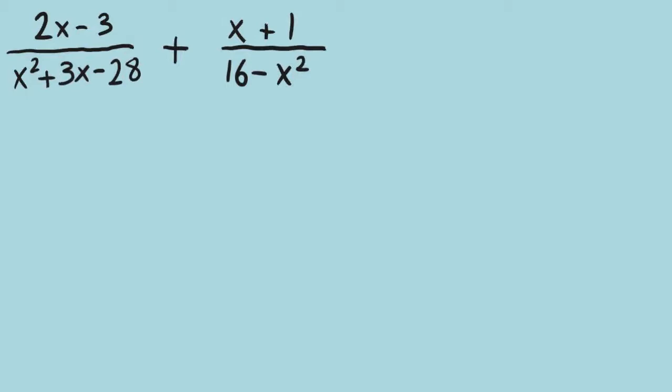What are your thoughts about factoring this trinomial? I would think about a pair of numbers multiplied together as negative 28, added together as positive 3 — positive 7 and negative 4.